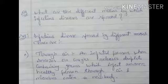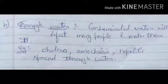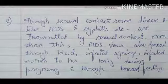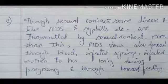Infectious diseases are spread through various means. First, through air: when an infected person sneezes or releases droplets, microorganisms enter a new body and infect another person. Second, through contaminated water, which affects many people — diseases like cholera, amoebiasis, and hepatitis spread through water. Through sexual contact, diseases like AIDS and syphilis are transmitted. The AIDS virus can also spread through infected syringes or from an infected mother to her baby during pregnancy and through breastfeeding.